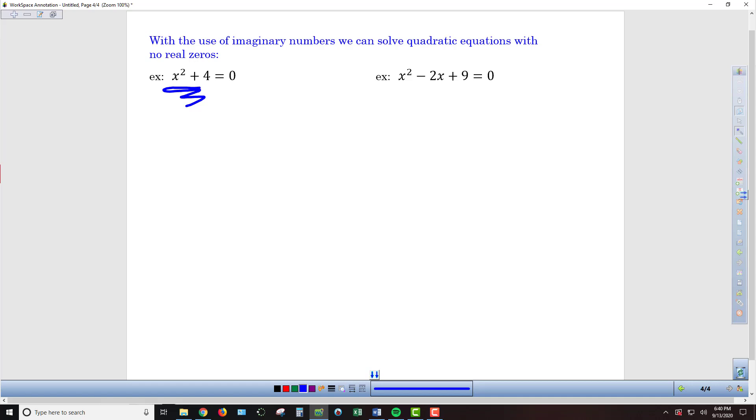Our only option is to isolate the square and then take the square root of both sides. I'm going to subtract 4 from both sides and then get x² = -4.